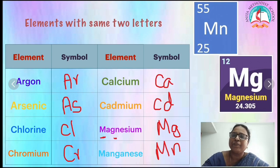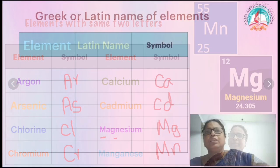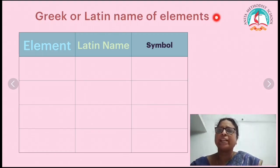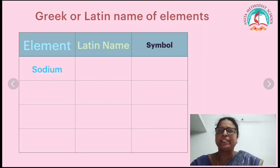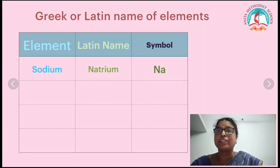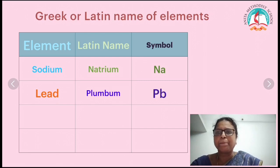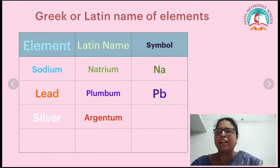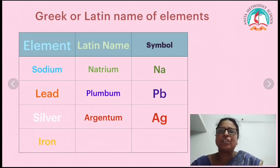Some elements use symbols based on their Greek or Latin names. Sodium — Latin name natrium — symbol Na. Lead — Latin name plumbum — symbol Pb. Silver — Latin name argentum — symbol Ag. Iron — Latin name ferrum — symbol Fe.